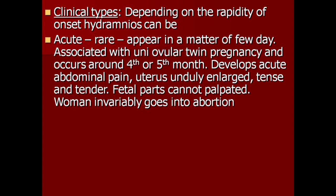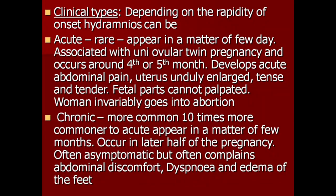Clinically, depending on the rapidity of onset, polyhydramnios can be divided into acute and chronic. Acute is rare, appearing in a matter of few days, associated with uniovular twin pregnancy, occurring around the 4th and 5th month. It develops acute abdominal pain; the uterus is unduly enlarged, tense, and tender; fetal parts cannot be palpated; and the woman invariably goes into abortion. Chronic is 10 times more common than acute.